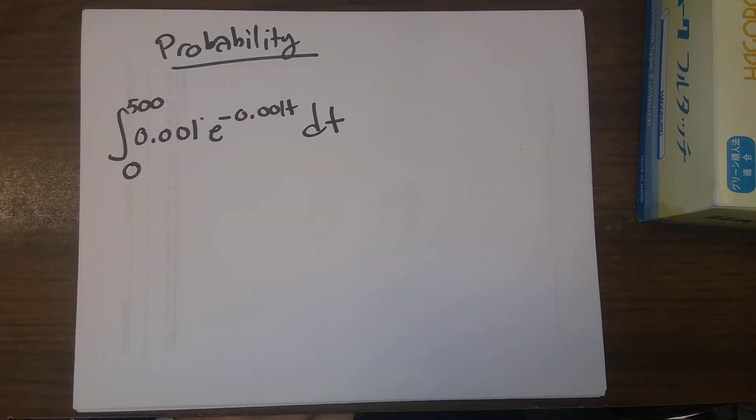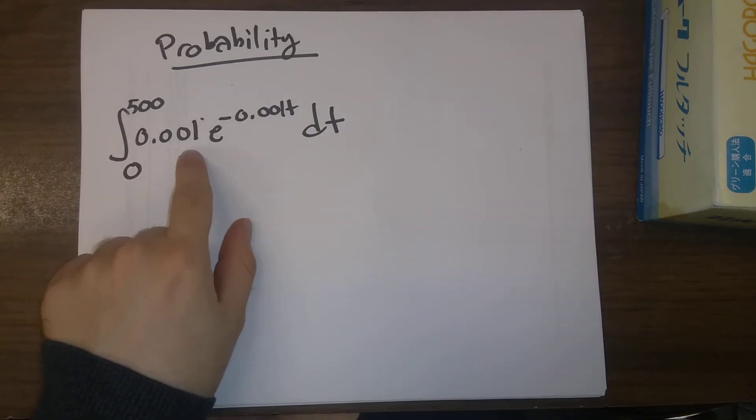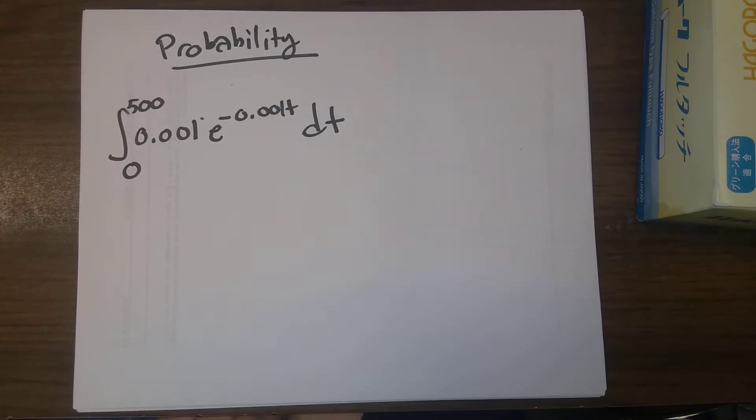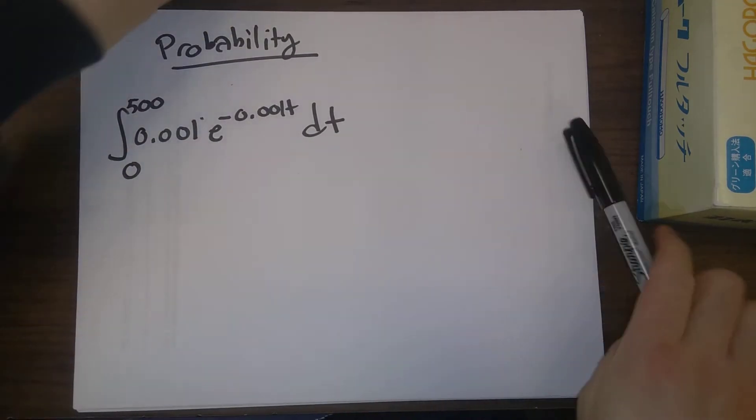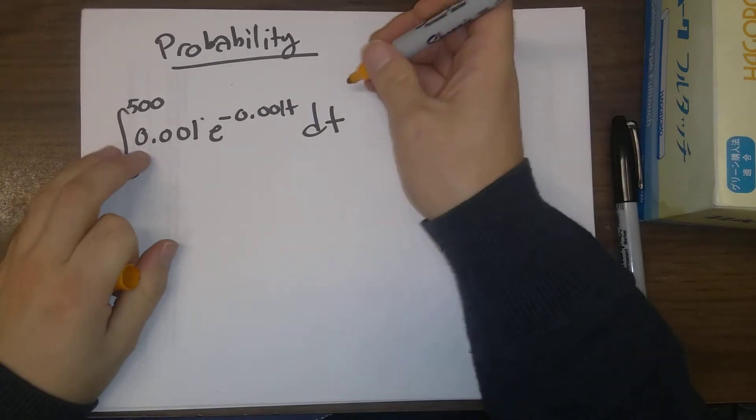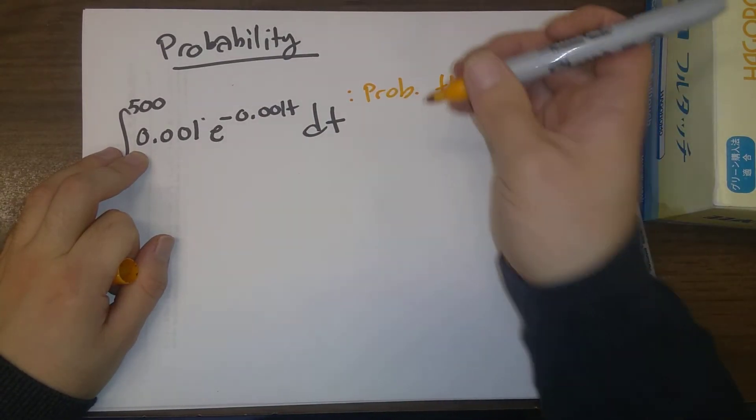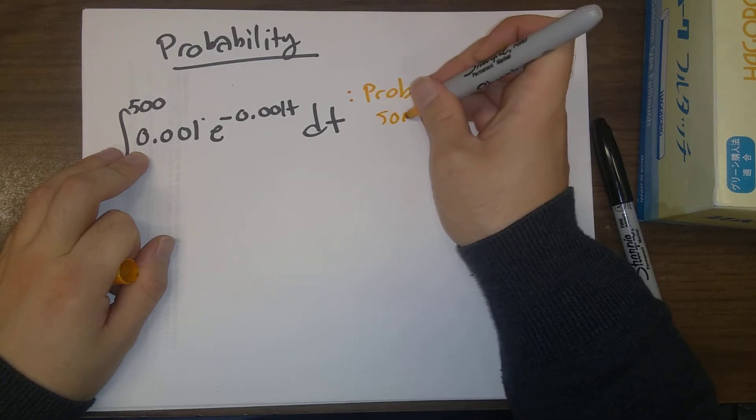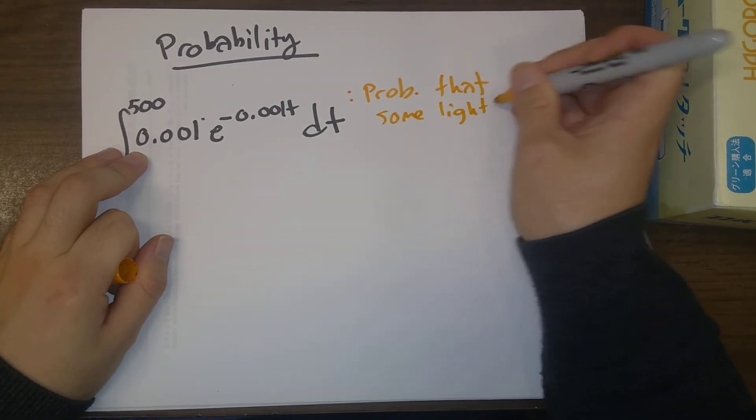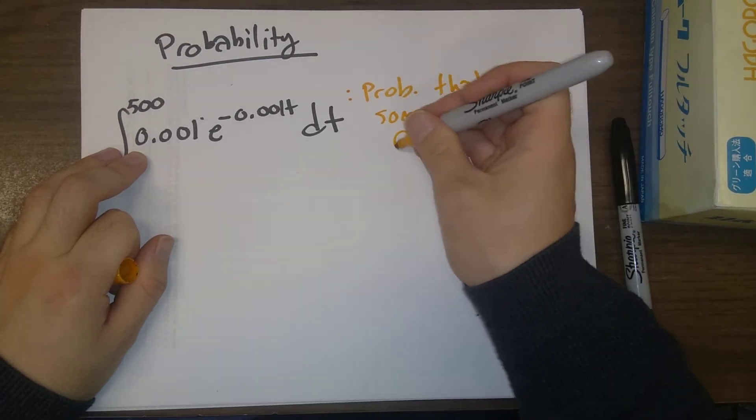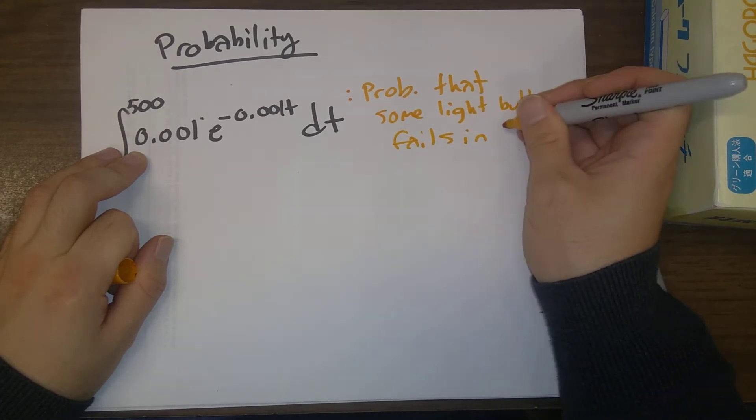So here is some expression: the integral from 0 to 500 of 0.001 times e to the minus 0.001t dt. This is giving the probability that some light bulb fails in the first 500 hours of use.